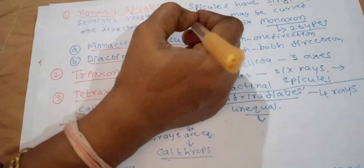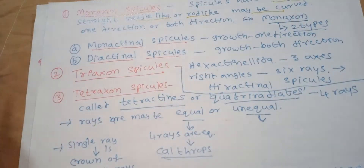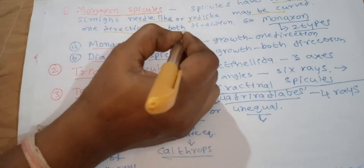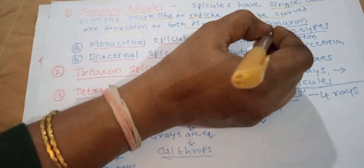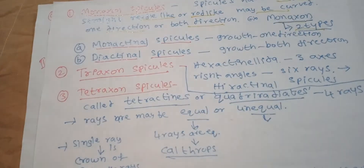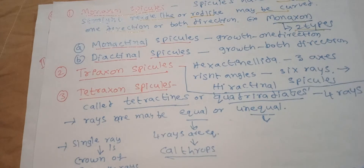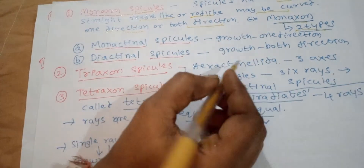Monaxon spicules are needle-like or rod-like and may be curved. Growth may occur in one direction or both directions. Monaxons are classified into two types: monactinal spicules, in which growth takes place in one direction only, and diactinal spicules, in which growth occurs in both directions.